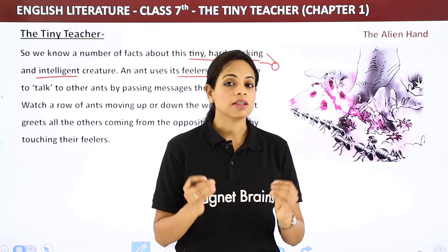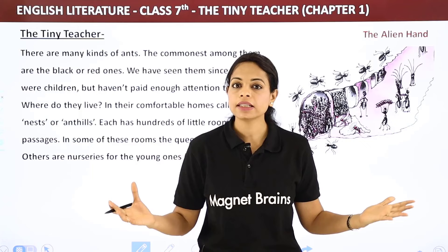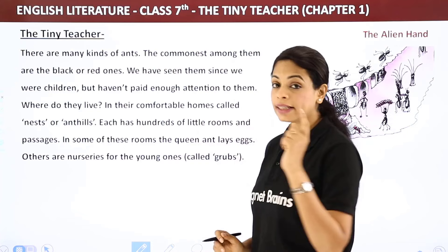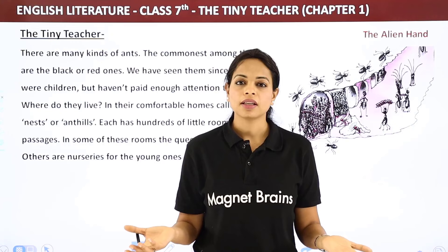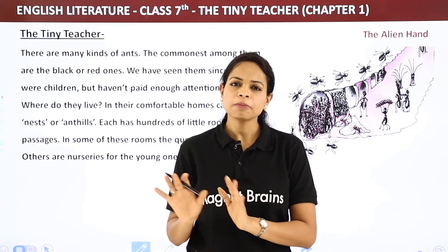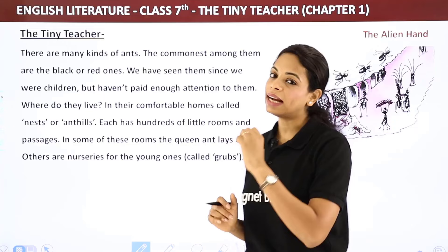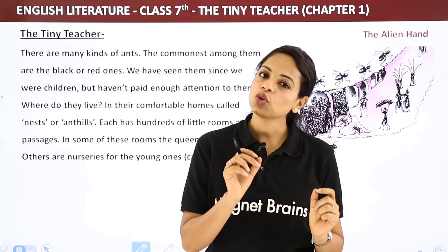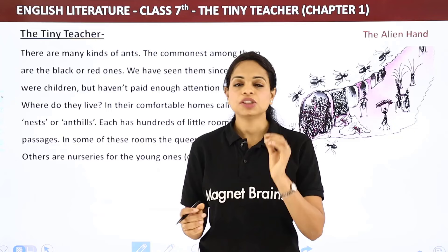There are many kinds of ants, but the commonest among them are the black or red ones. We have seen them since we were children but haven't paid enough attention. Where do they live? In their comfortable homes called nests or ant hills. Remember, we usually use the word 'nest' with birds, but ants' homes can also be called nests.